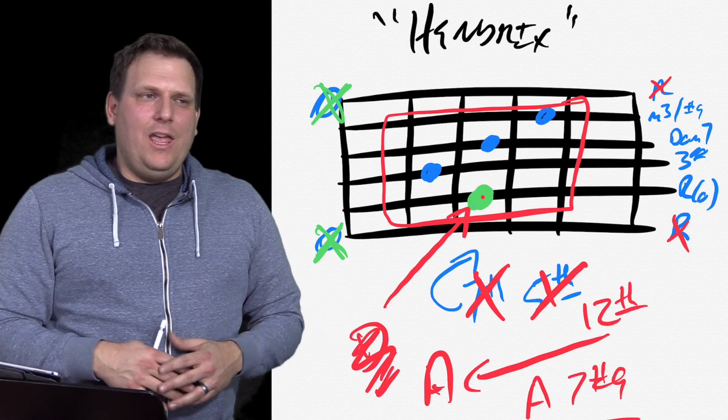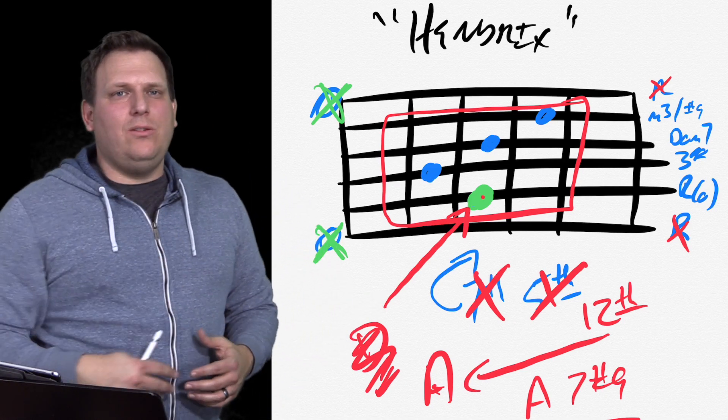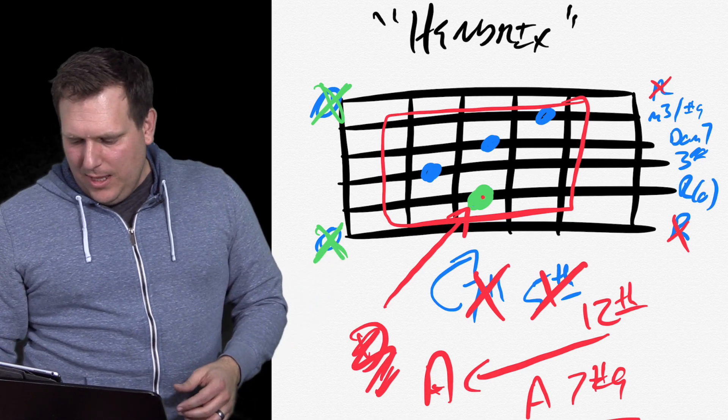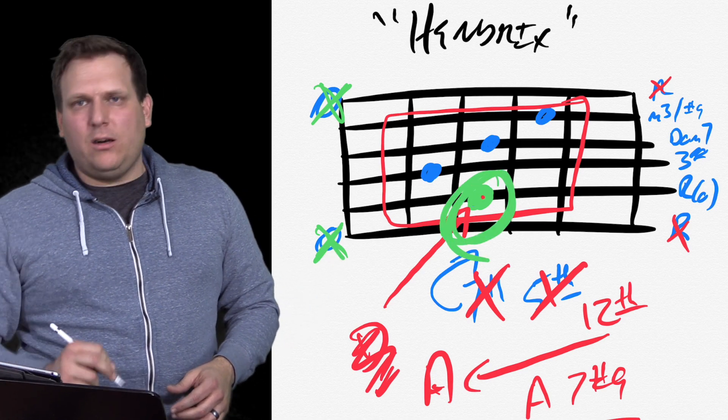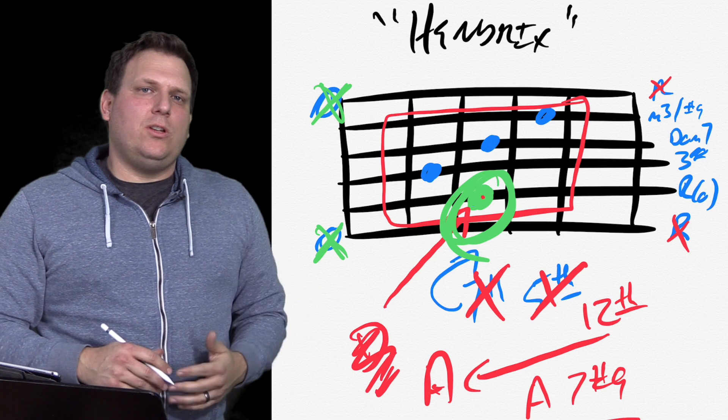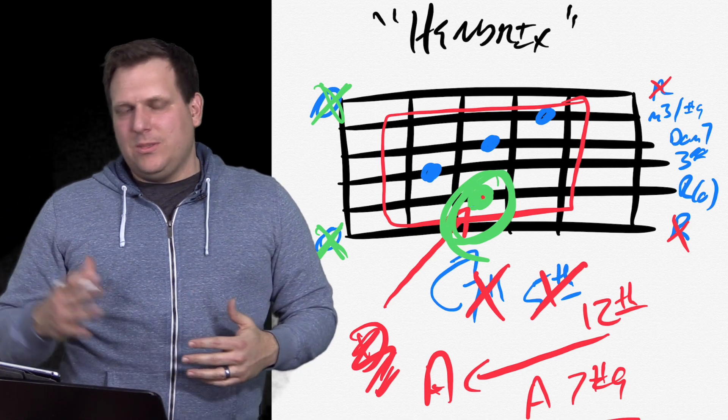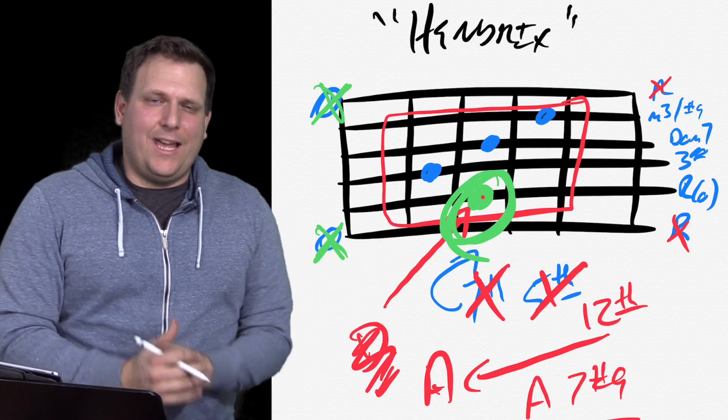Now, if you need to play a B flat seven sharp nine, you can do that now. Cause you, all you have to do is take that root note right there, whatever note that root note is playing. That's the root of the chord. And then it becomes that seven sharp nine. It's that simple.